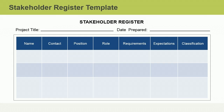The specific stakeholder information categories on a template can vary from project to project, but in general, you'll need to include three basic types of information about each stakeholder. Identifying information tells you who stakeholders are and the basic facts you'll need to know in order to work and communicate with them. This includes name, contact information, position, and role in the project. Most identifying information is gathered during step one of creating the stakeholder register: gathering information from project documents.